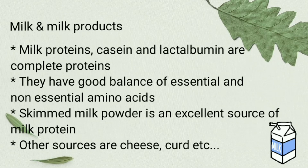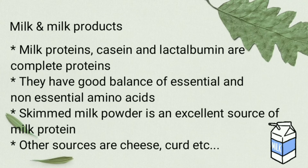First one: milk and milk products. Milk proteins such as casein and lactalbumin are considered to be complete proteins because they contain a good balance of essential and non-essential amino acids. Skimmed milk powder is an excellent source of milk protein. Other sources include cheese, curd, etc.